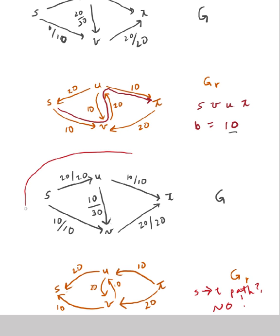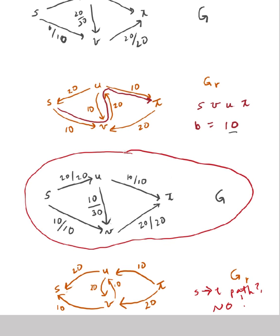This is my graph with maximum flow. I've got 30 coming out of S and 30 going into T, giving a maximum flow of 30.